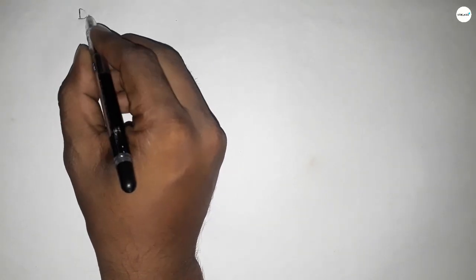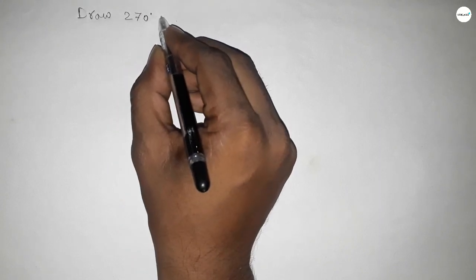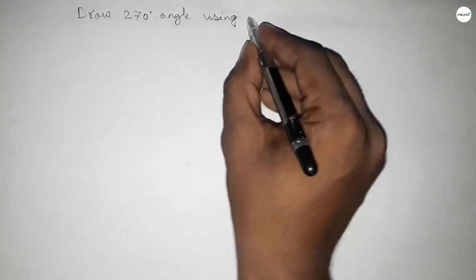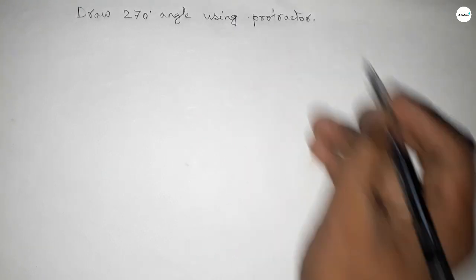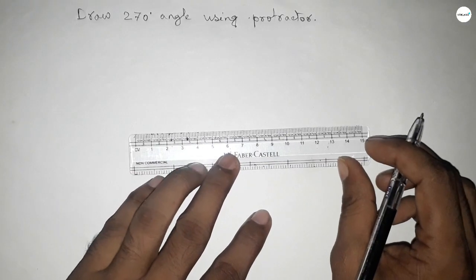Hi everyone, welcome to SSR classes. Today in this video we have to draw a 270-degree angle using a protractor. Let's start the video.